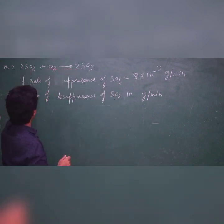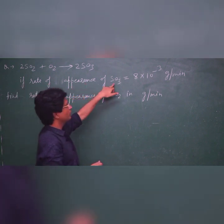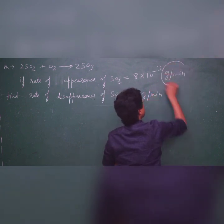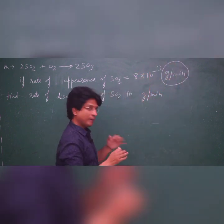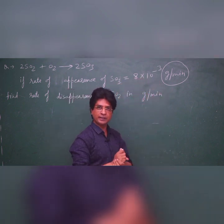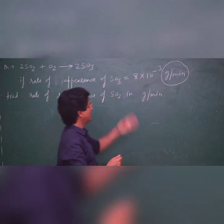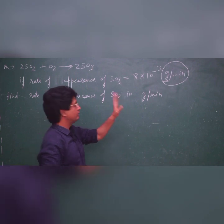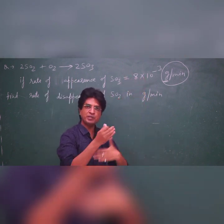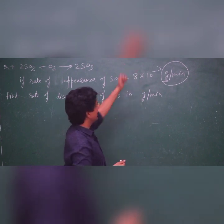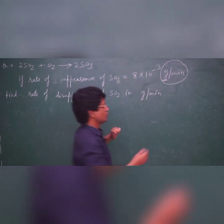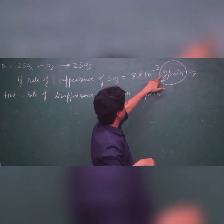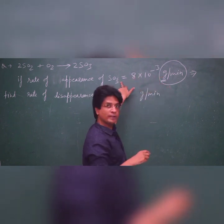They have given the equation and also given that the rate of appearance of SO₃ is 8×10⁻³ grams per minute. This 'grams per minute' is the catch. Normally the data given is in moles per liter per second or per minute. But here the data is in grams. This equation is written in moles, but the data given is in grams — there is a mismatch. To remove that mismatch, I should convert grams into moles by dividing by the molecular weight of SO₃.